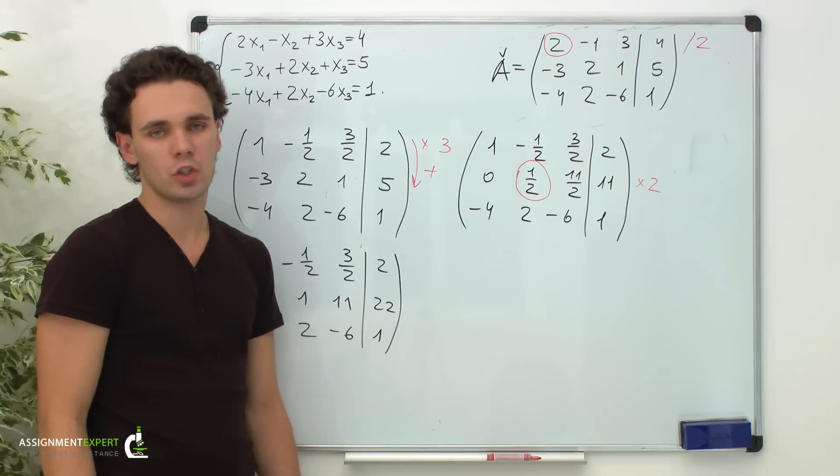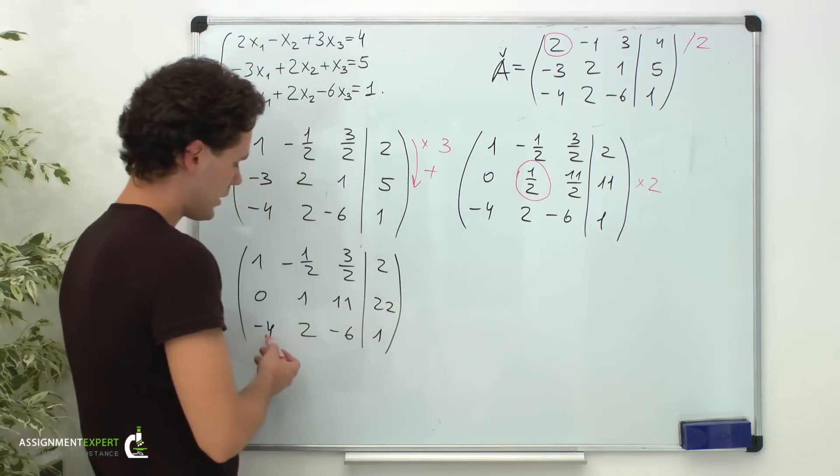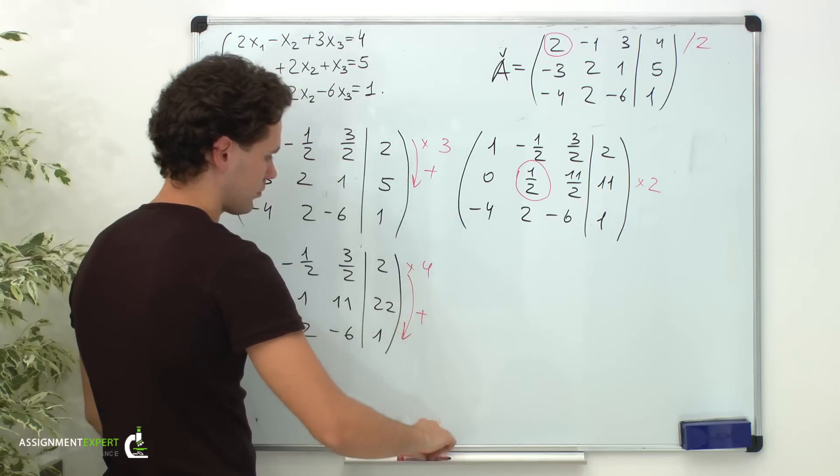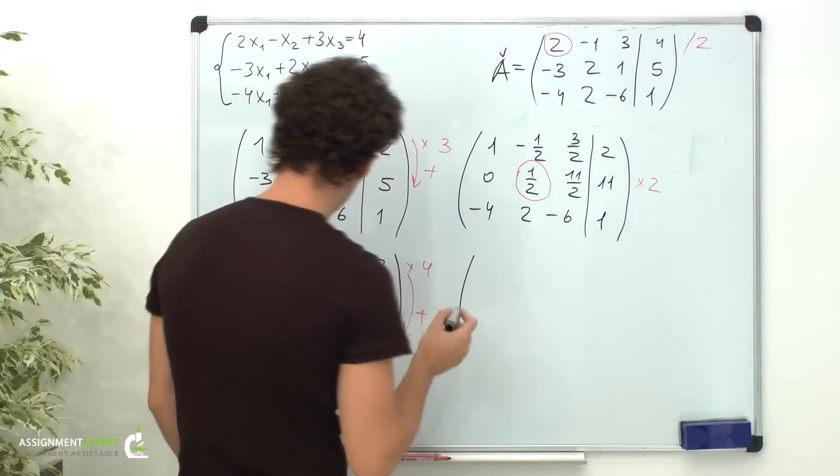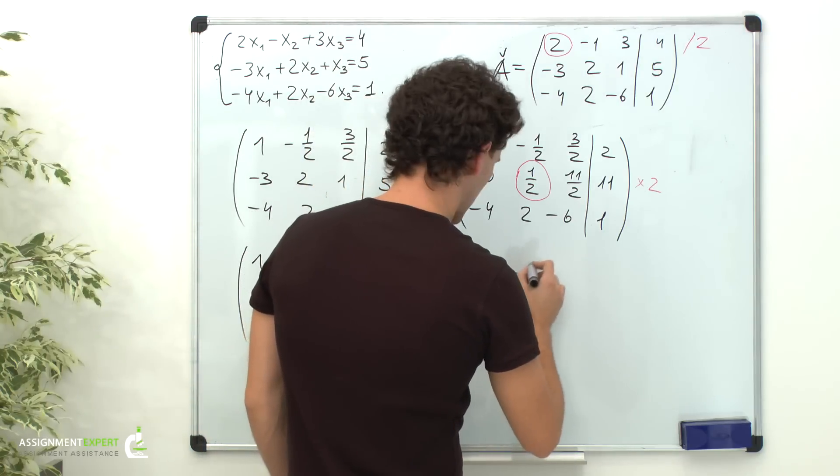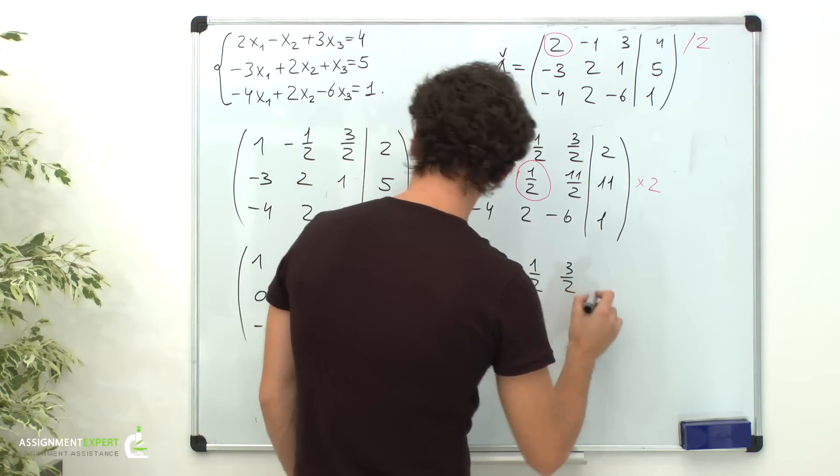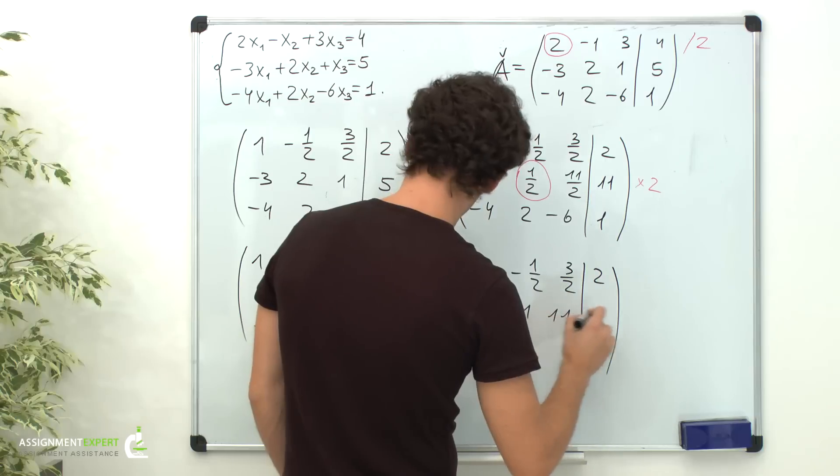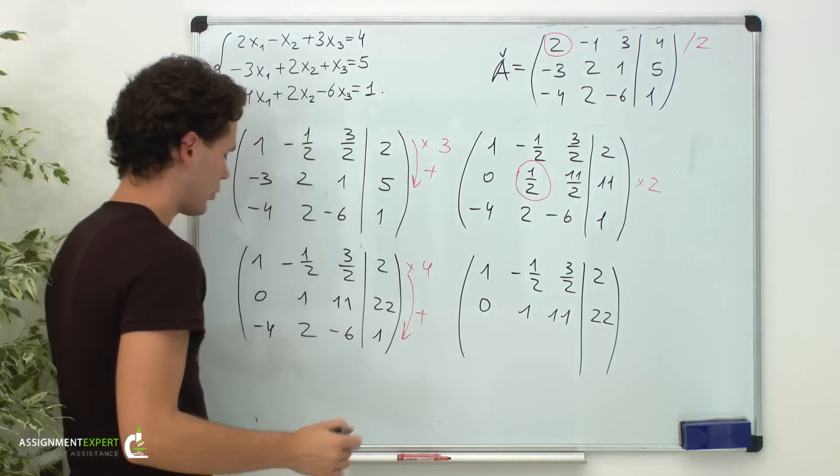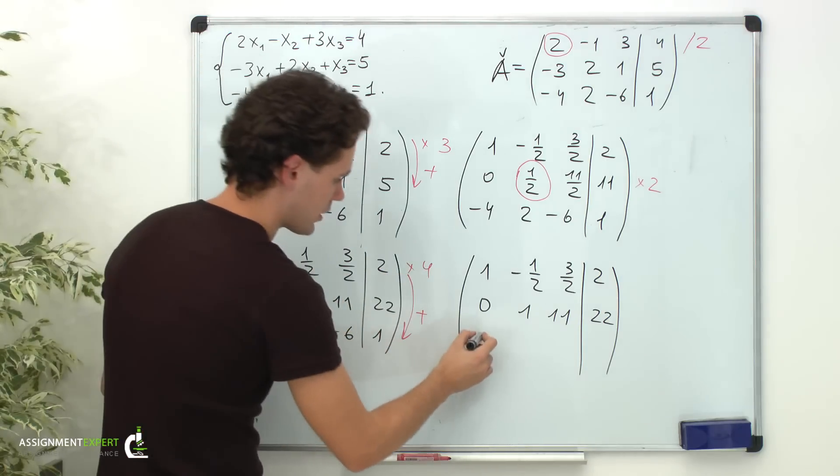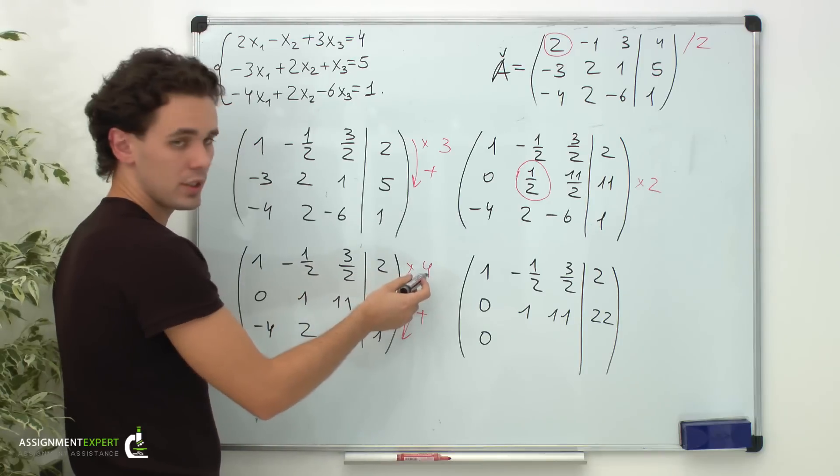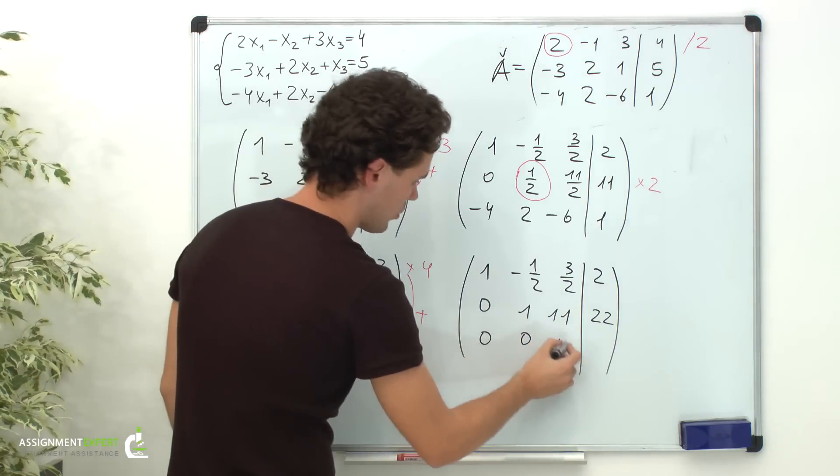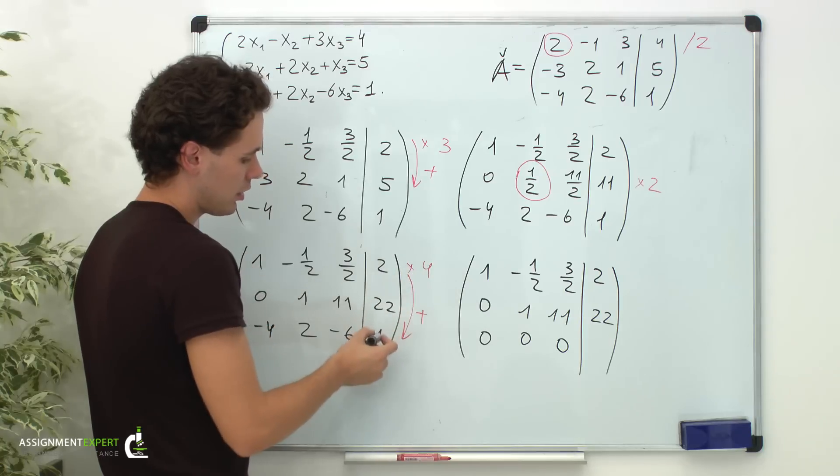Now, we will perform the same operations for the third row. To eliminate x1, we will multiply the first row by 4 and add it to the third row. First row without changes: 1, negative 1 half, 3 halves, and 2. Second row: 0, 1, 11, and 22. And now, the third row: 1 times 4 equals 4, minus 4 gives us 0. Negative 1 half times 4 is negative 2, plus 2, also 0. 3 halves times 4 is 6, minus 6, also 0. And 2 times 4 is 8, plus 1 equals 9.